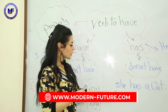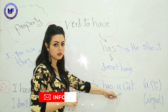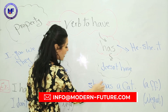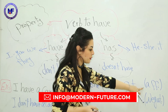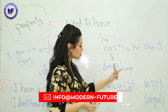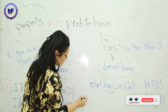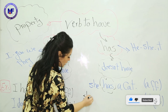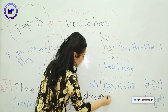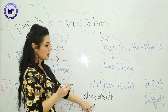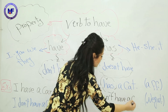Another example: 'She has a cat.' That's the affirmative form. If I want to change it into negative form, I write: 'She doesn't have a cat' — not 'doesn't has', but 'doesn't have'.